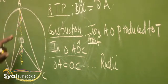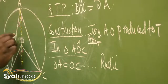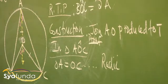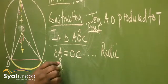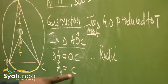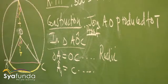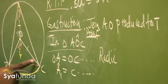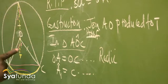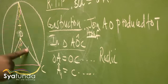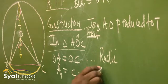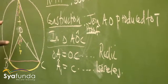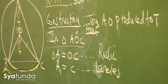In this triangle, if this side equals this side — we've indicated that — therefore those two angles will be the same. We can conclude that angle A1 equals angle C. Why? Because these are base angles of an isosceles triangle — the angles opposite the equal sides are equal.